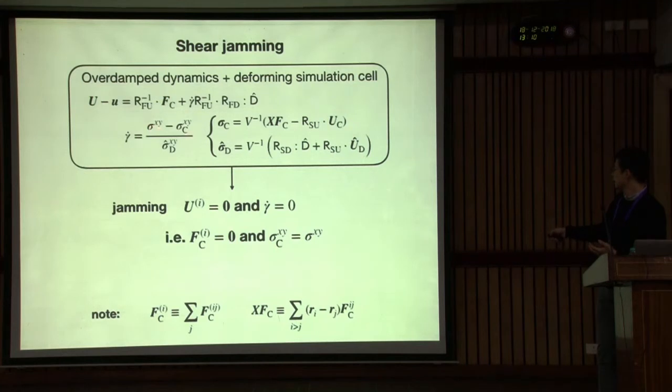Gamma dot becomes zero, implying that total force, force balance equation, total force acting on particle, contact force is zero. And this part becomes zero. All shear stress is supported by contact force, not hydrodynamic force, just contact force. Then gamma dot becomes zero. This is the jammed state. Entire formulation is force balance. The jammed condition we find is this static force balance.